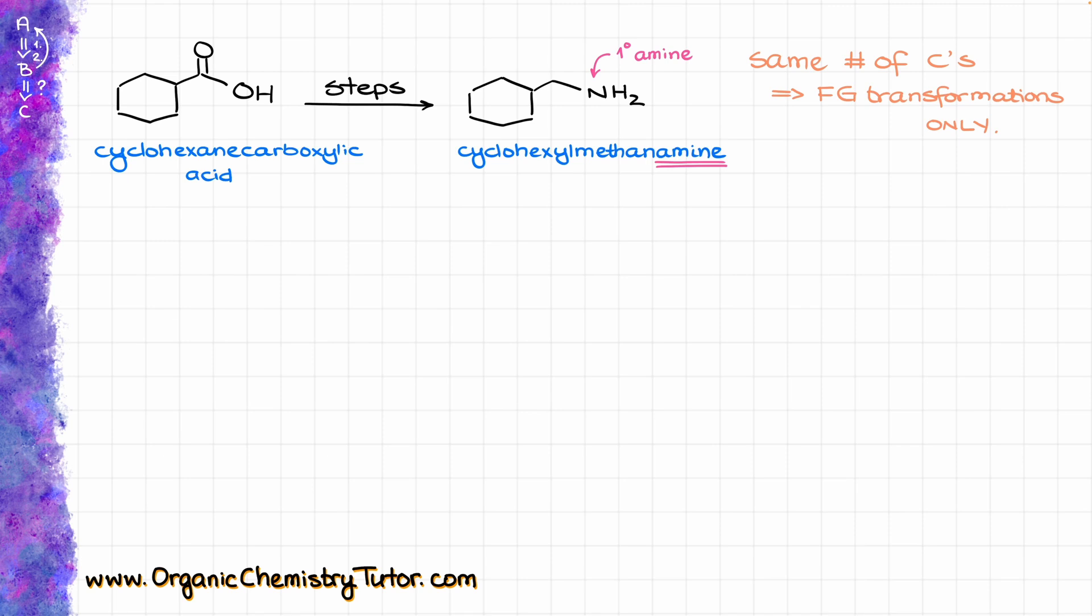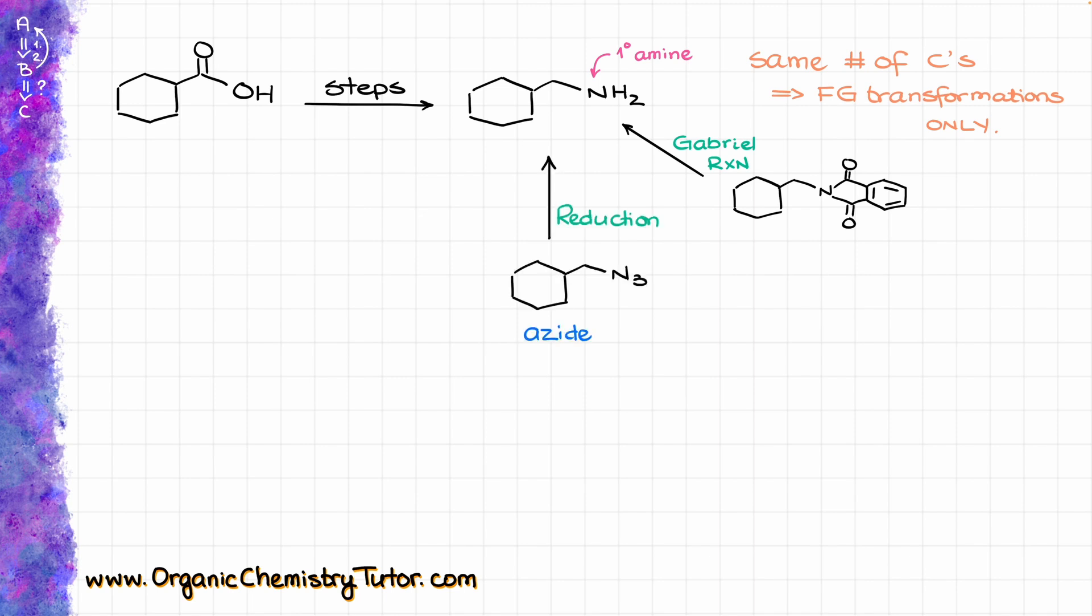So I'm going to immediately think about all the different ways I can make such a molecule. A few different methods pop into my head right away. It's going to be something like maybe a Gabriel synthesis or reduction of azides or maybe reduction of amides.